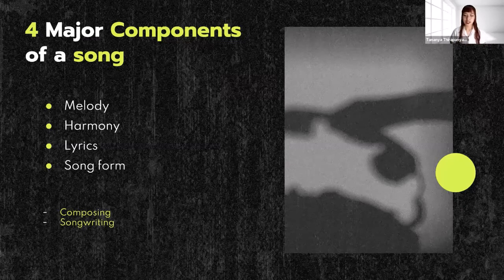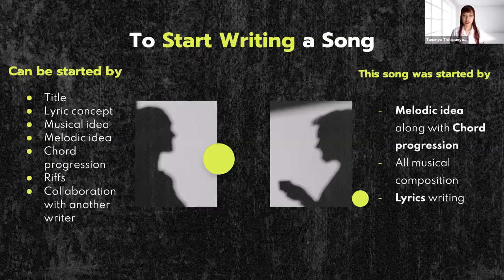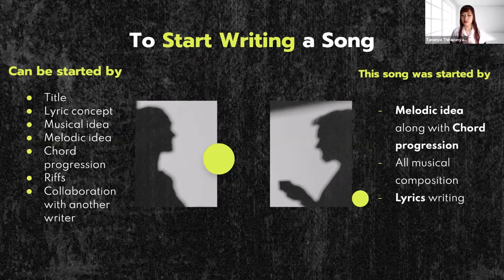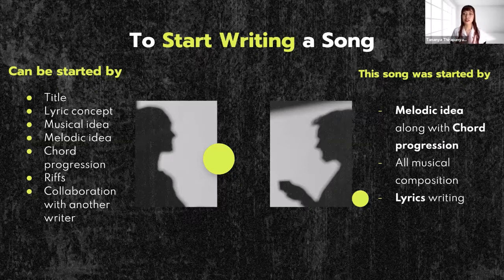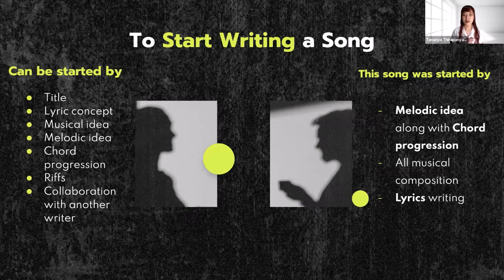To start a song, as mentioned in 'Great Songwriting Techniques' by Jack Perry Cohn, there are lots of ways, including the title, concept, central idea, and musical idea. For musical idea, you create the musical parts first — including the rhythm, groove, or melody — and let the feeling lead to other parts. Other approaches include melodic idea, chord progression, and collaboration, which is when two or more songwriters work together.